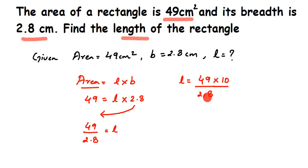I'm going to cancel 490 and 28 using the 7 table: 7 sevens are 49 and 7 fours are 28. So this gives 70 divided by 4. We can cancel further in the 2 table or divide directly in the 4 table. Since 70 doesn't go evenly into 4, the answer will be in decimal. I'll divide directly by 4.